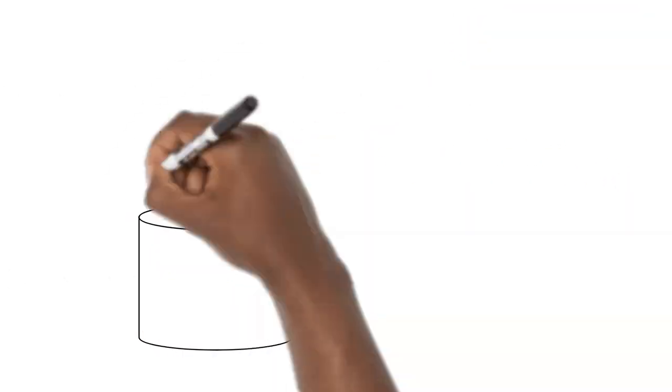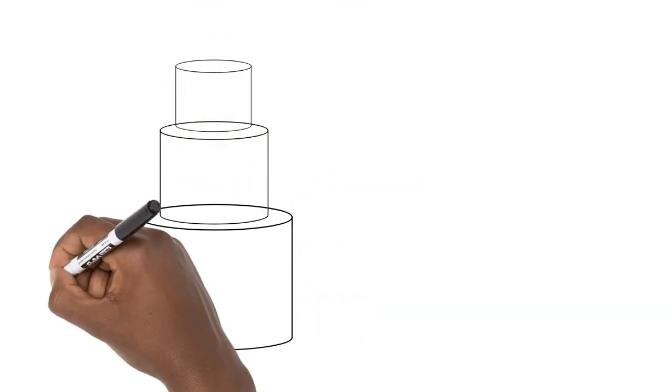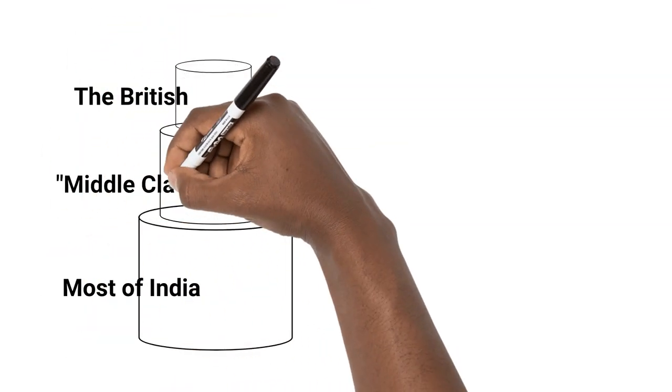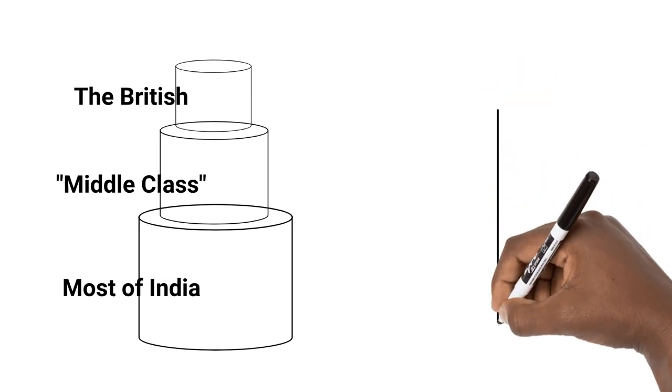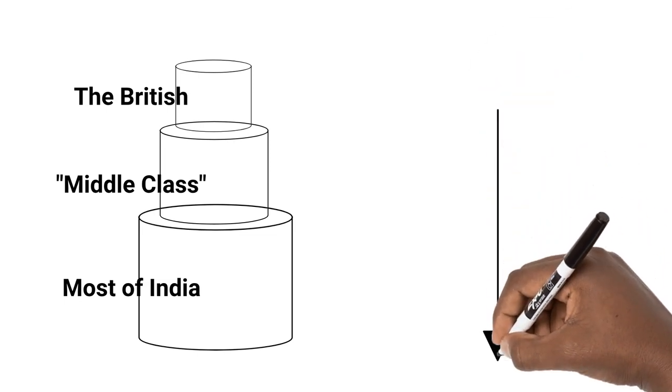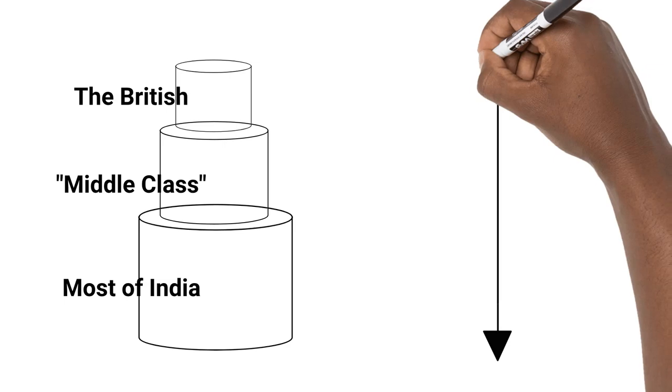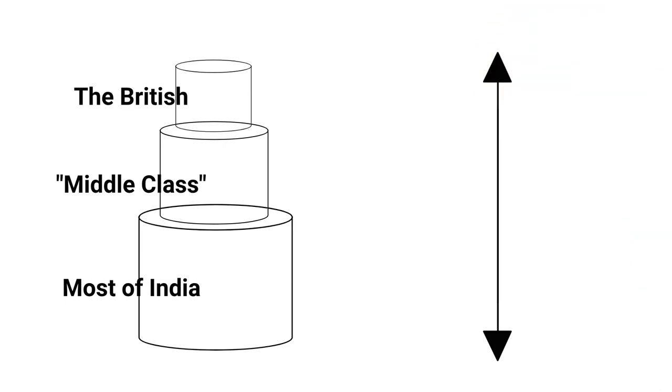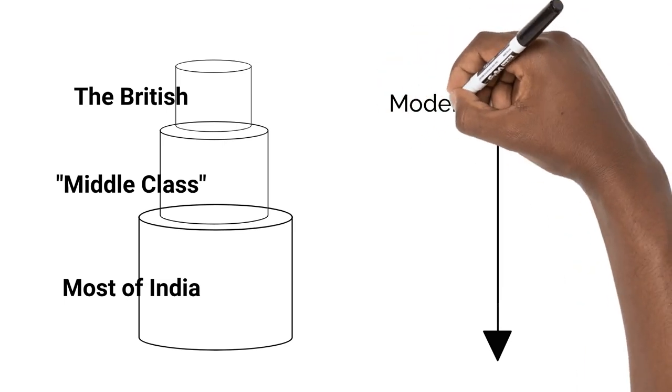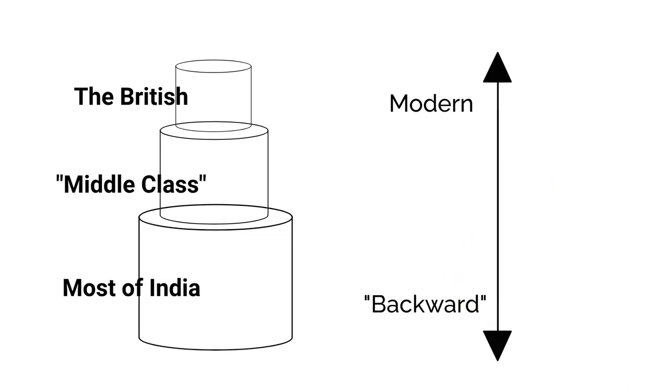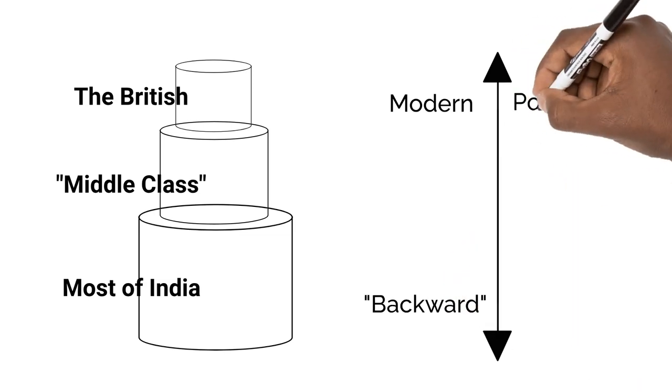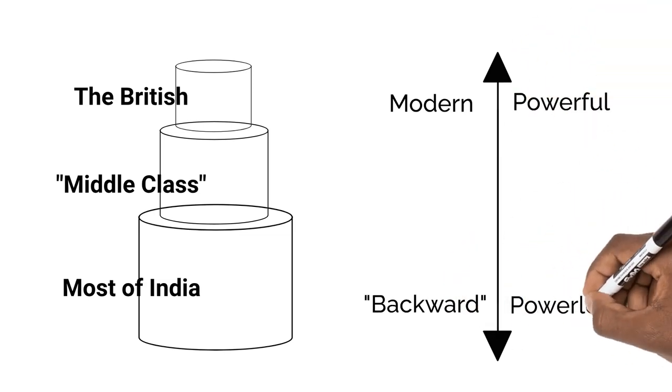This isn't to suggest that they were making up this middleness. The members of this new group may not have all been in the middle in terms of economic or political resources. But when it came to culture, they were. They were acting as kind of middlemen, as they saw it, between the educated modern British and the traditional backward Indians. Or to put it another way, between the powerful and the powerless.